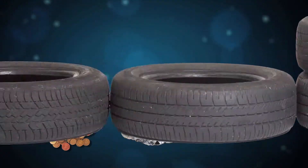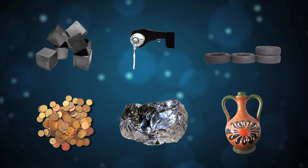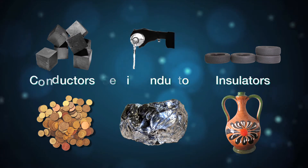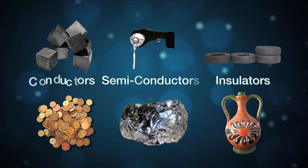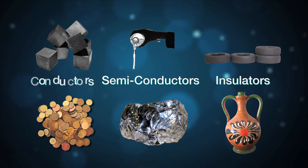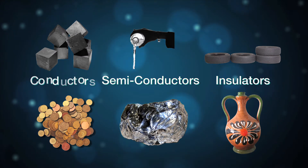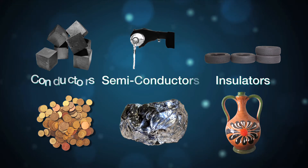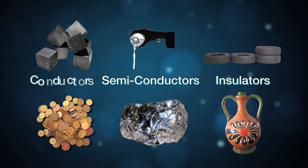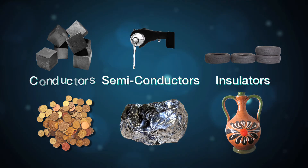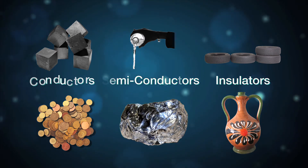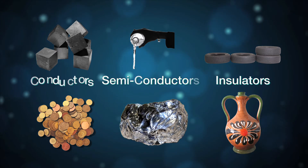Any material can be categorized as a conductor or an insulator, or somewhere in between. Typically, metals are utilized as conductors and plastics and rubbers are utilized as insulators.